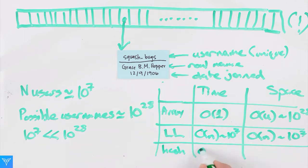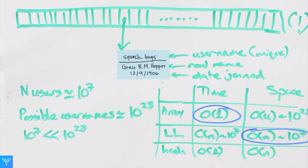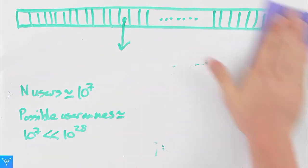For a hash table, the lookup is order one, matching the lookup of the array. And the space requirement is also optimal at order n. The hash table has combined the best aspects of the array and linked list. Let's see how that works.